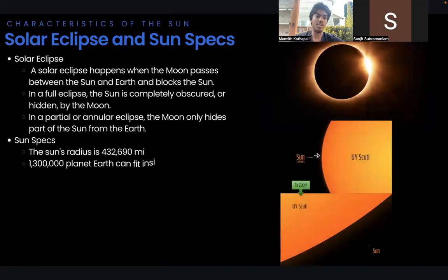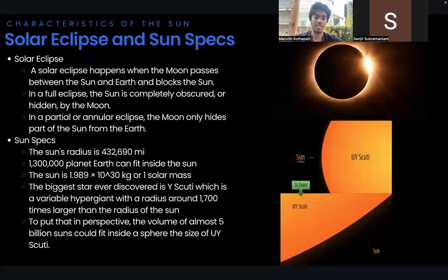Now, let's talk about the solar eclipse. A solar eclipse happens when the moon passes between the sun and earth and blocks the sun. In a full eclipse, the sun is completely obscured or hidden by the moon. In a partial or annular eclipse, the moon only hides part of the sun from the earth.